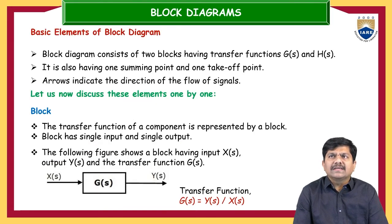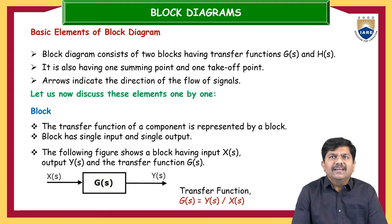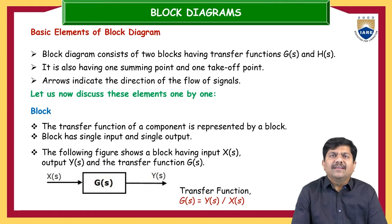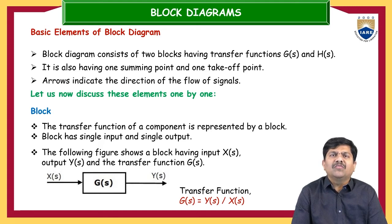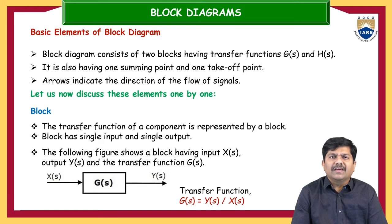The block diagram consists of two blocks having transfer functions G(S) and H(S). G(S) is the forward path transfer function and H(S) is the feedback path transfer function. It also has different numbers of summing points and takeoff points. An important thing to remember is the arrow heads — arrow heads indicate the direction of energy or signal flow in the block diagram. The direction of the arrow is very important as it indicates from which block to which block the energy is flowing, which is highly helpful while reducing complex block diagrams into a simplified form.